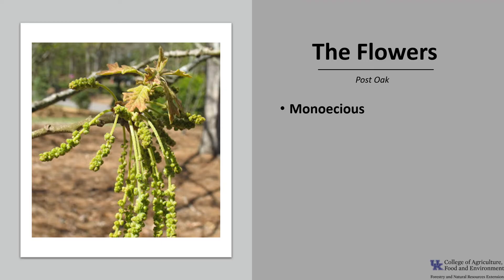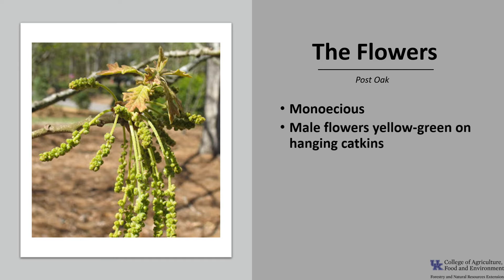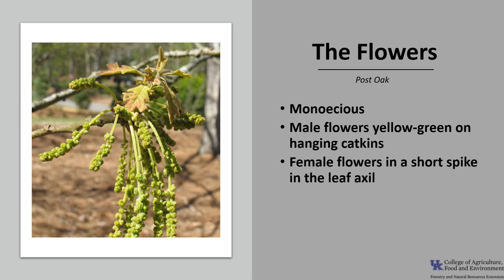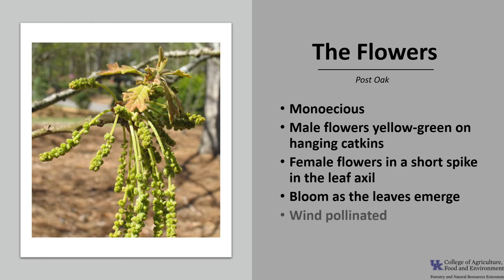Post oak is monoecious, which means 'one house' and refers to the tree having both male and female flowers. The male flowers are yellow-green on hanging catkins, and the female flowers are typically reddish and are in a short spike in the leaf axil. The flowers bloom as the leaves are emerging, from March to May depending on location, and the flowers are wind pollinated.